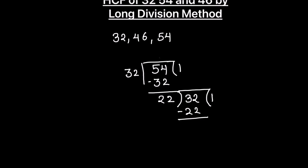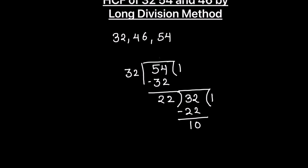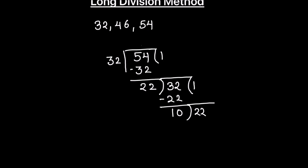We get a remainder of 10. We keep on dividing until we get the remainder as 0. Now 22 becomes our new dividend and 10 becomes our new divisor. 10 times 2 is 20.